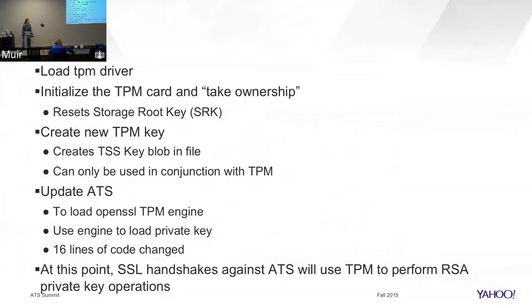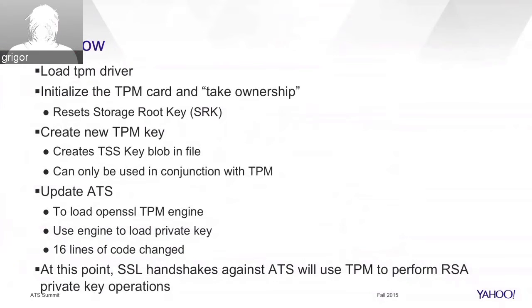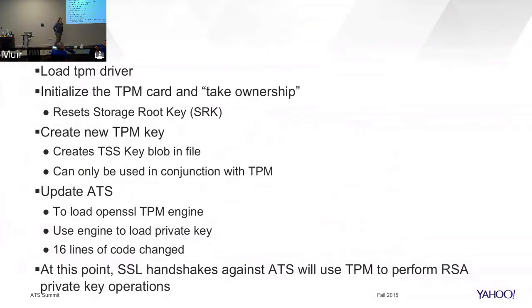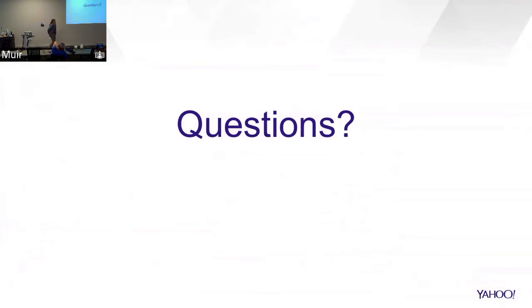I spent about half my time trying to load the engine via an engine config file with no code change, but gave up after half a day. The code change is pretty basic boilerplate: load the engine, initialize it, load the private key. It worked, though it was an emulator so not particularly fast. Unfortunately I only had 16 lines of code change so I didn't win hack day. But it was fun. Someone offered a physical TPM to use. We have access to TPMs in production now — they're pretty widely spread. I'll share the diff and can push the branch.